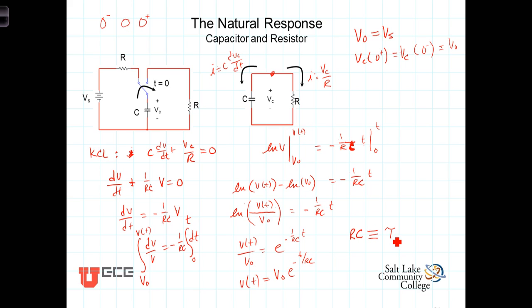The units of tau are seconds, and that time constant represents a measure of the quickness or the speed with which the circuit responds. Rewriting this, we have V of t equals V0 times e to the minus t over tau. This voltage starts at V0 across the capacitor, and as time progresses, that voltage decays exponentially. The rate at which it's changing is determined by this time constant, which in this case is equal to R times C.